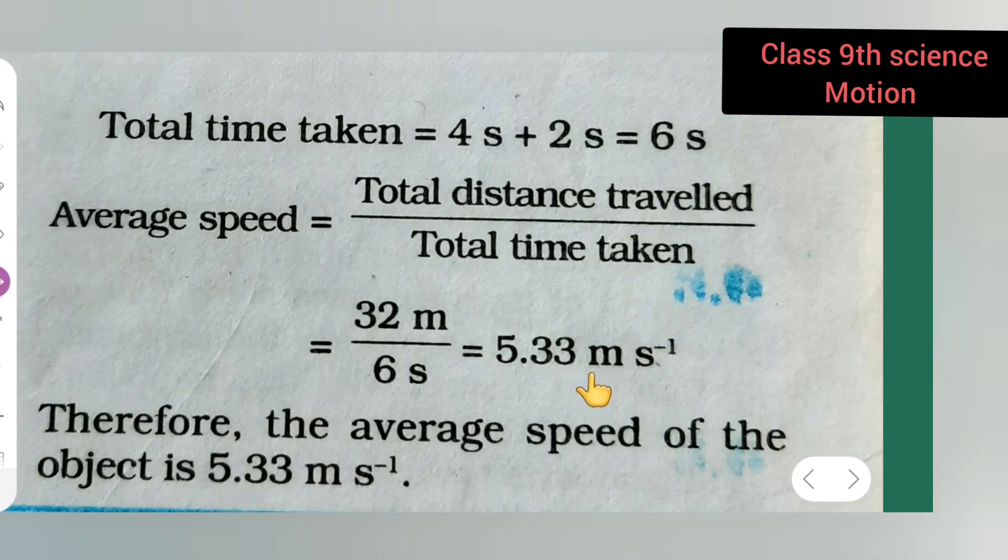The answer is 5.33 meters per second. Therefore, the average speed of the object is 5.33 meters per second. You all can take down the answer to today's problem. Thanks for watching.